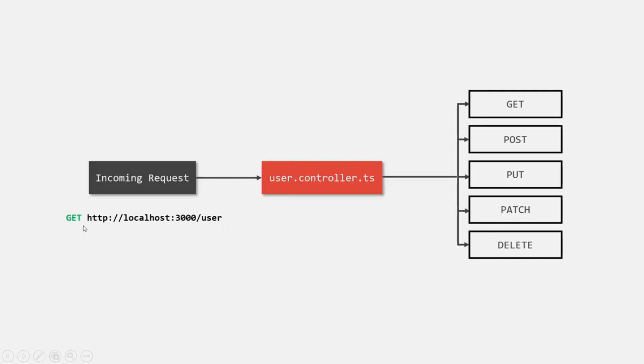So when we are sending a GET request to this URL, the UserController will have a method which will handle the GET request on that URL. It defines methods to handle different types of requests, then creates a response for that request and sends it back to the client. I hope now you have a brief understanding of what a controller is and what we use it for.